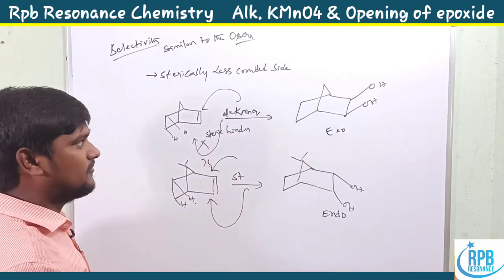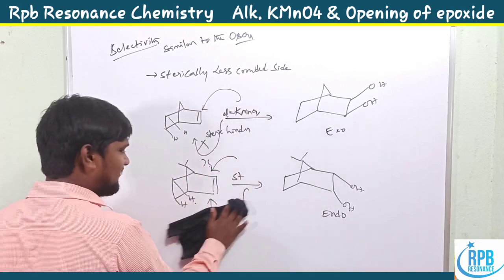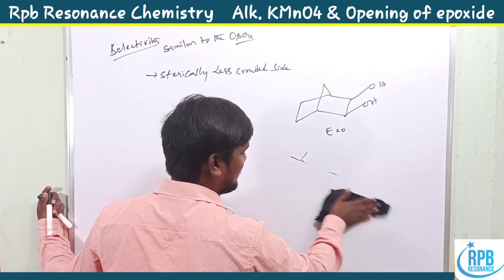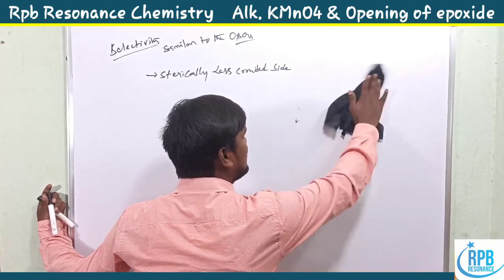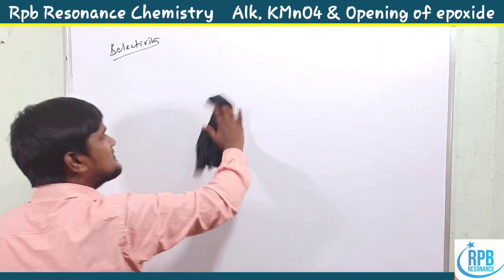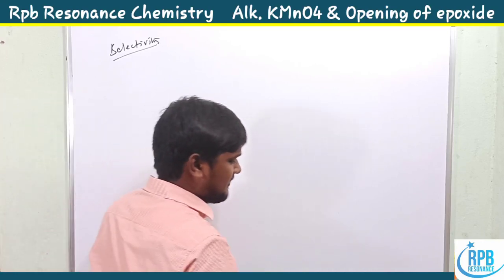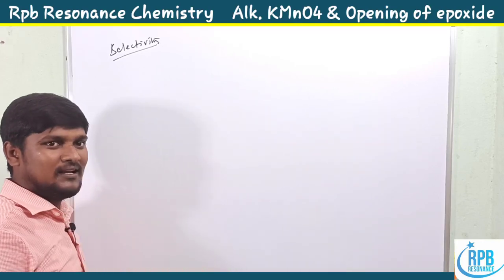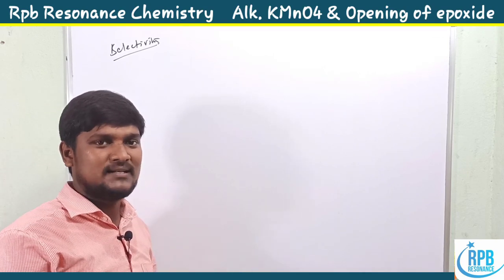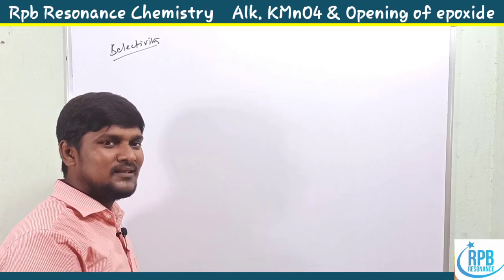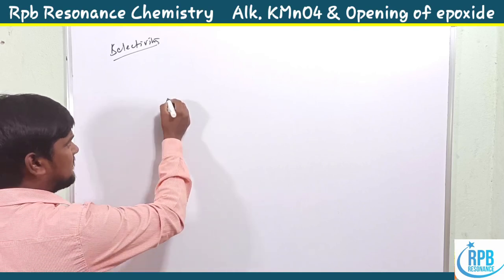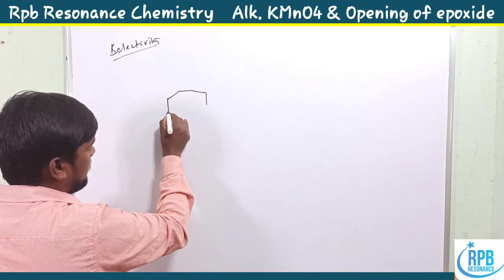The norbornene example gives endo-alcohol as the minor product and exo-alcohol as the major product. This illustrates the selectivity of KMnO4. However, the yield is around 52–53%, which is not very high, making it less suitable for large-scale or bulk preparations where higher yield is needed.